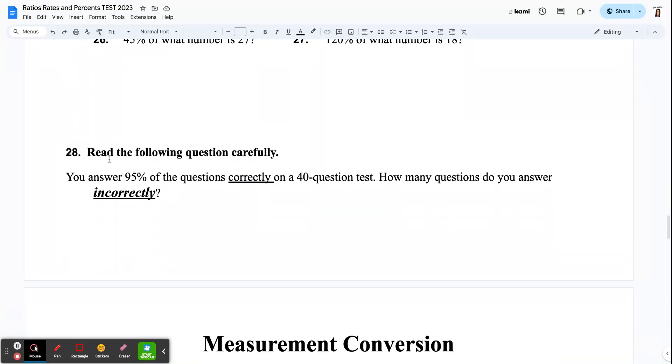And then this last one, I said, read the following question carefully. Kids always kind of make oopsies on this because of the details in the question. So here's your scenario. You answer 95% of the questions correctly on a 40-question test. So I gave you a test. There's 40 questions on it. And you answered 95% of them correct. So how many questions did you answer incorrectly? Or how many did you get wrong? That's what you're trying to figure out.